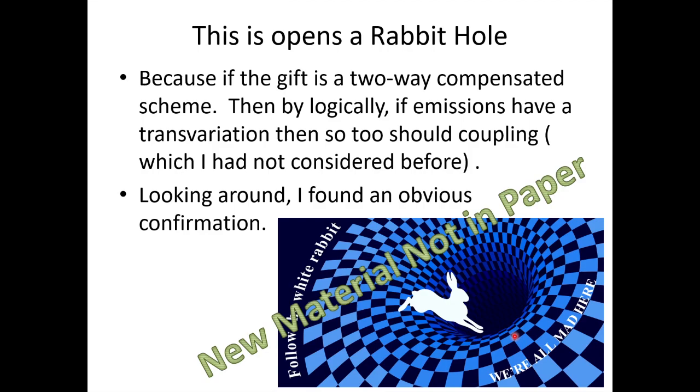This issue of forwards and backwards needed to get the correct measurement of time opens up a rabbit hole. Because if the gift is a compensated scheme, then logically, if emissions have a transvariation, then so too should coupling, which is something I had not really considered before. But after I thought about it, looked around and said, oh man, this is obvious. This is new material that is not found in the paper. This is brand new material.